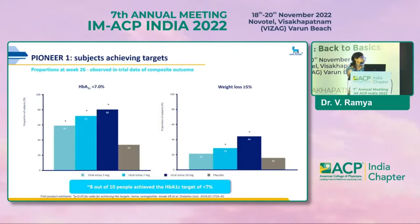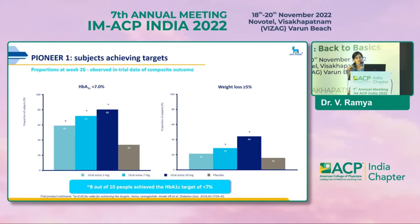Coming to the series of Pioneer trials, done over the past couple of years to see the CV safety of oral semaglutide: Pioneer 1 compared different doses of oral semaglutide with placebo, and at each dose including 3 mg, there was significant good glycemic control with most individuals achieving HbA1c less than 7%. However, statistically significant weight loss was seen only with 7 mg and 14 mg — with more than 5% weight loss.